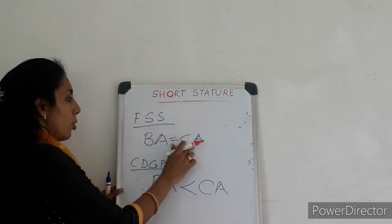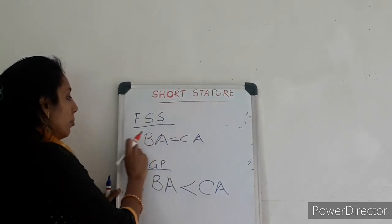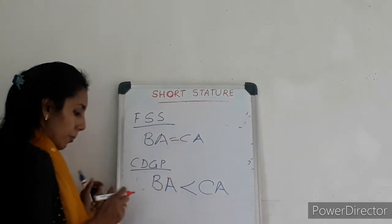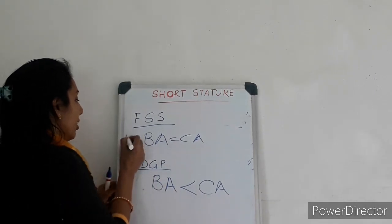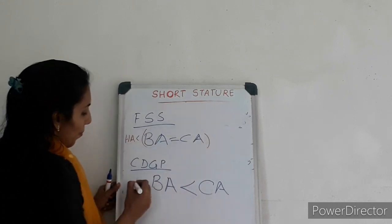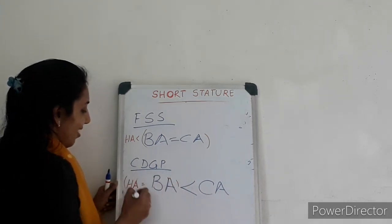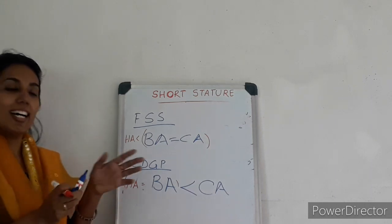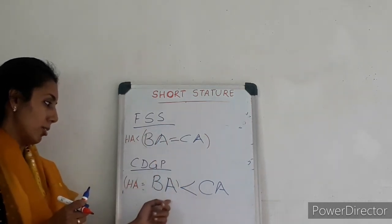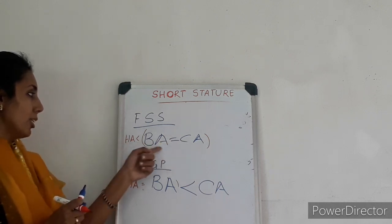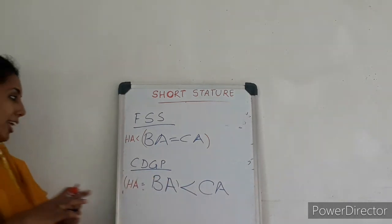In FSS, the bone age and chronological age match — so height age will be less than both of these. In CDGP, the bone age and height age will correspond and both will be less than the chronological age. The basic concept is: in FSS, skeletal maturation is normal; in CDGP, skeletal maturation is delayed.